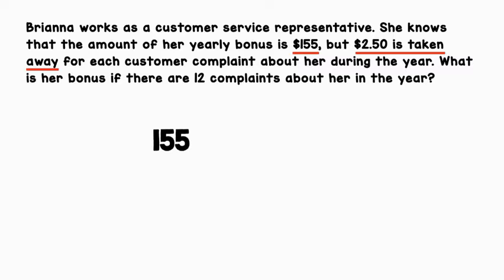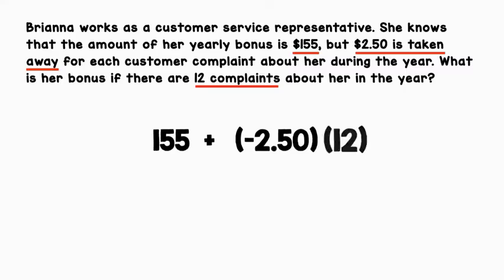We know Brianna's yearly bonus is $155. We also know that $2.50 is taken away for each customer complaint. So we're going to combine $155 with negative $2.50. We also know that there are 12 complaints about her during the year, so we're going to multiply negative $2.50 by 12. We have two parentheses next to each other — parentheses here are indicating multiplication. Let's use order of operations to solve this expression.